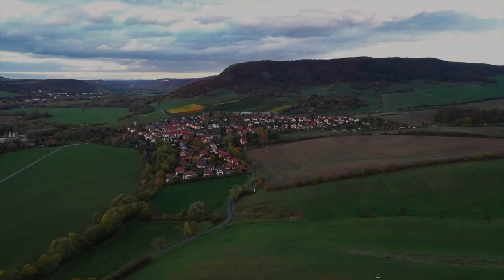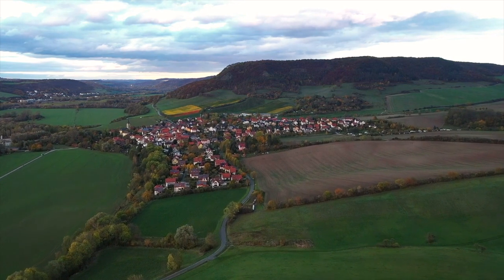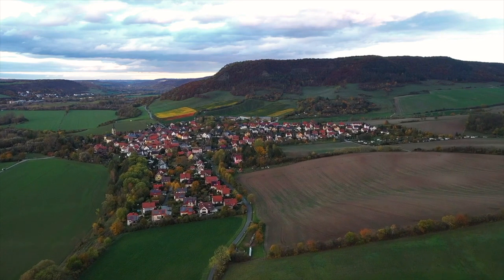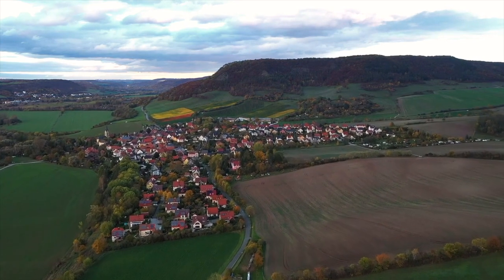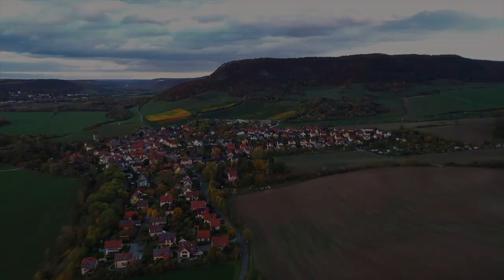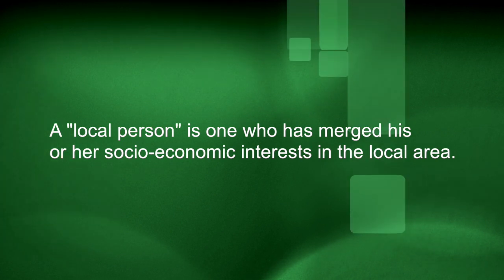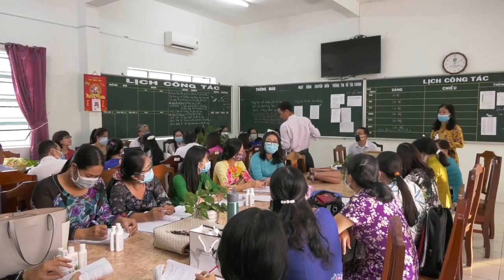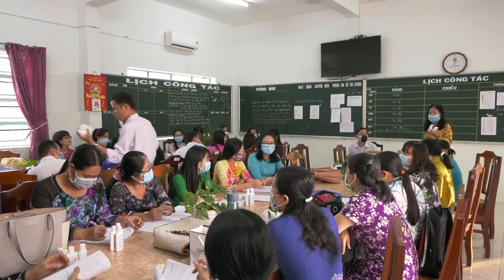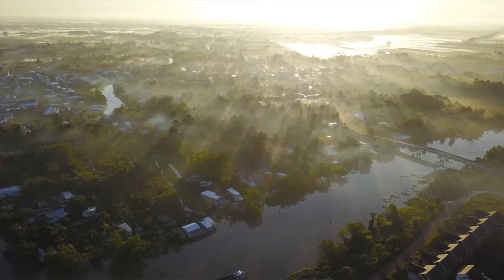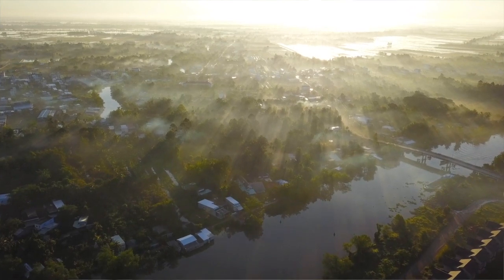Economic planning under Prout is decentralized. This means the decisions for the local economy are made locally and not by bureaucrats or politicians who don't have economic, cultural or sentimental ties in the area. The definition of a local person is someone who has merged their economic interests with the area. When local people are empowered to make the economic decisions for their own area, the outcomes will enhance their own economy and society. They will also have a greater concern for the environment if they are living in the area themselves.